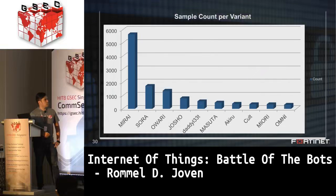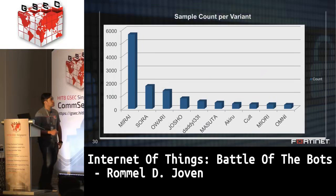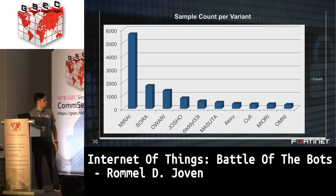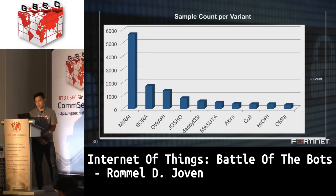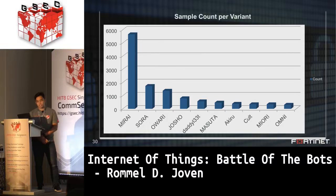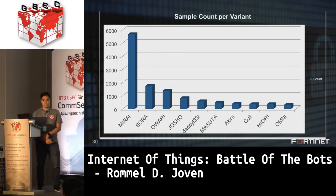Filtering by sample count per variant, most samples still belong to original Mirai — suggesting many cybercriminals are testing or learning with it, while fewer are skilled enough to actually modify the bot. The top five variants by sample count are Mirai, Sora, Owari, Joshua, and Daddy L330.